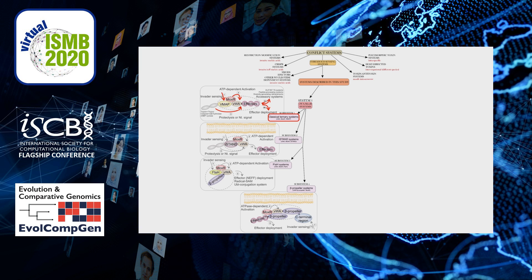Additional regulation is likely provided by proteases or nucleotide-generating enzymes fused at the N-terminal of the VMAP. We also observe several accessory systems that likely amplify the overall response to the conflict, including peptide processing systems and diversity-generating retro elements. The other three subsystems share the MOX-R and VWA domains with subsystem 1 but have other distinguishing components: in subsystem 2 the third component is an inactive version of the STAN domain of the AAA+ ATPases; in subsystem 3 it is an FTSH domain, also of the AAA+ ATPase superfamily; and in subsystem 4 it is a beta-propeller-containing protein. Trans-membrane regions were also detected in subsystems 2 and 4, indicating activity near the cell membrane.